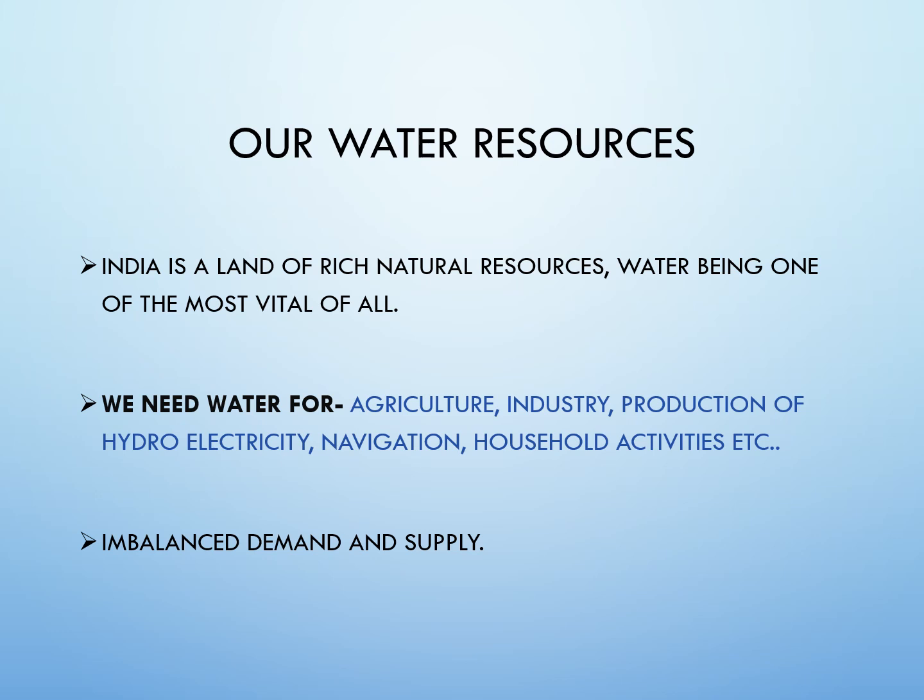We can proudly say that India is a land of rich natural resources, and water is one of the most important among them. Agriculture is the backbone of the Indian economy, and a large amount of water is used for agricultural activities — apart from that, for industrial purposes, hydroelectricity, navigation, and household activities. The demand for water is increasing rapidly with population growth, whereas the supply remains almost the same. A large amount is going to waste due to pollution and poor management, creating an imbalance between demand and supply. We should use water efficiently and maintain a balance between demand and supply.